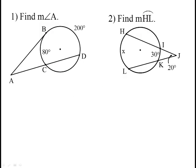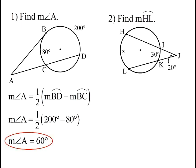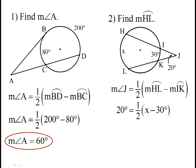Why don't you pause the video here and see if you can figure out these two angles. The measure of angle A — point A is outside the circle — so the measure of angle A is going to be half the difference of those two arcs. It's half of 200 minus 80, which works out to be 60 degrees. Now they want the measure of arc HL. I know that this angle is half the difference of the big arc HL minus this little arc of 30 degrees. Plugging in 20 for the angle and X for HL, I multiply both sides by 2 and add 30 — X works out to be 70 degrees.